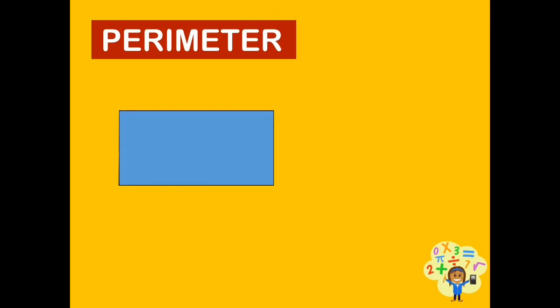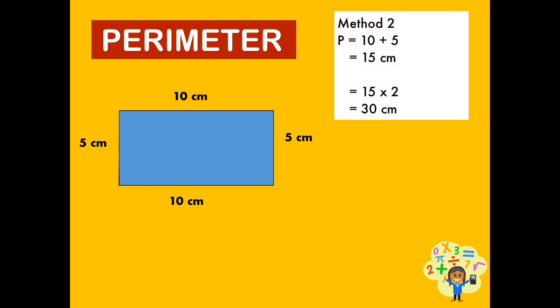We can use two other methods to find the perimeter of the given rectangle. The rectangle has two longer sides and two shorter sides, which are equal. We can first find the total length of one pair of the longer side and the shorter side. Then, we multiply it by 2. So 10 plus 5 equals 15, and 15 times 2 would be 30 centimeters.